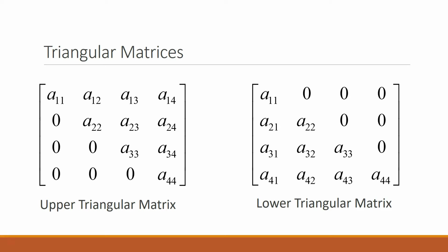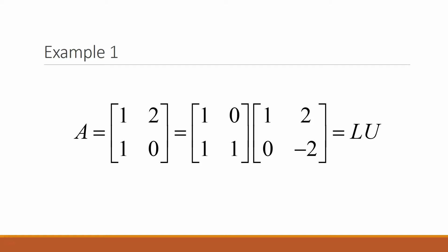A matrix which contains elements above or on the main diagonal is considered an upper triangular matrix, as seen here on the left. A matrix where its elements are below or on the main diagonal is considered a lower triangular matrix, as seen here on the right.